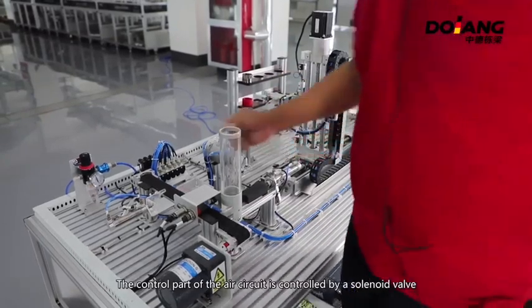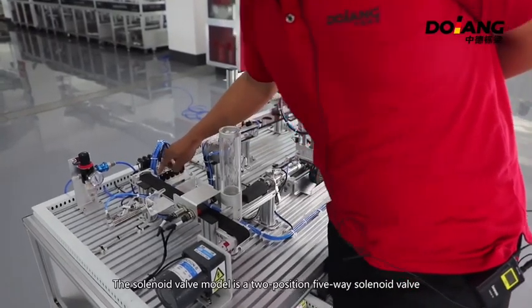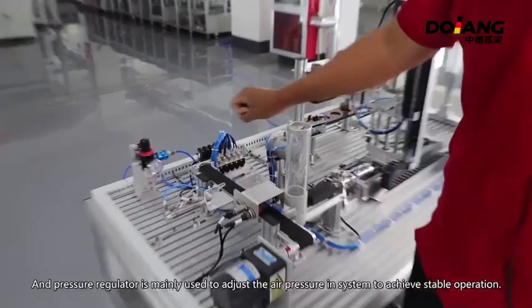The control part of the air circuit is controlled by a solenoid valve. The solenoid valve model is two-position, five-way solenoid valve.